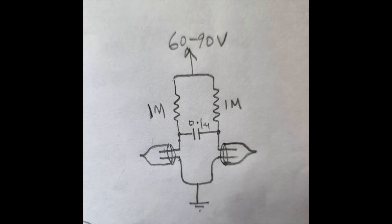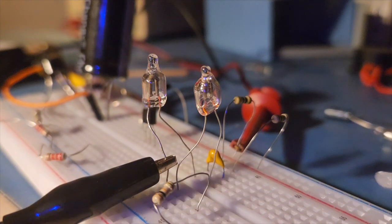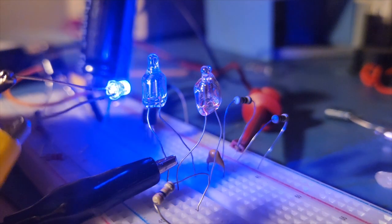And here's a circuit that doesn't use any mechanical relays, and it just uses two neon lamps to create an astable multivibrator.